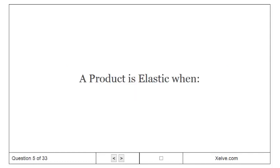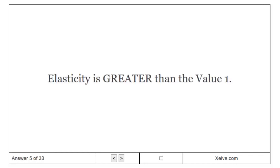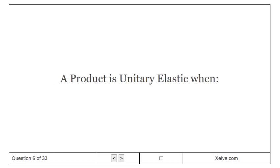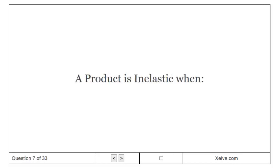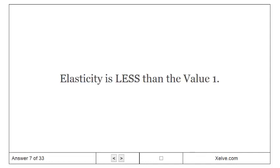A product is elastic when elasticity is greater than the value one. A product is unitary elastic when elasticity is equal to the value one. A product is inelastic when elasticity is less than the value one.